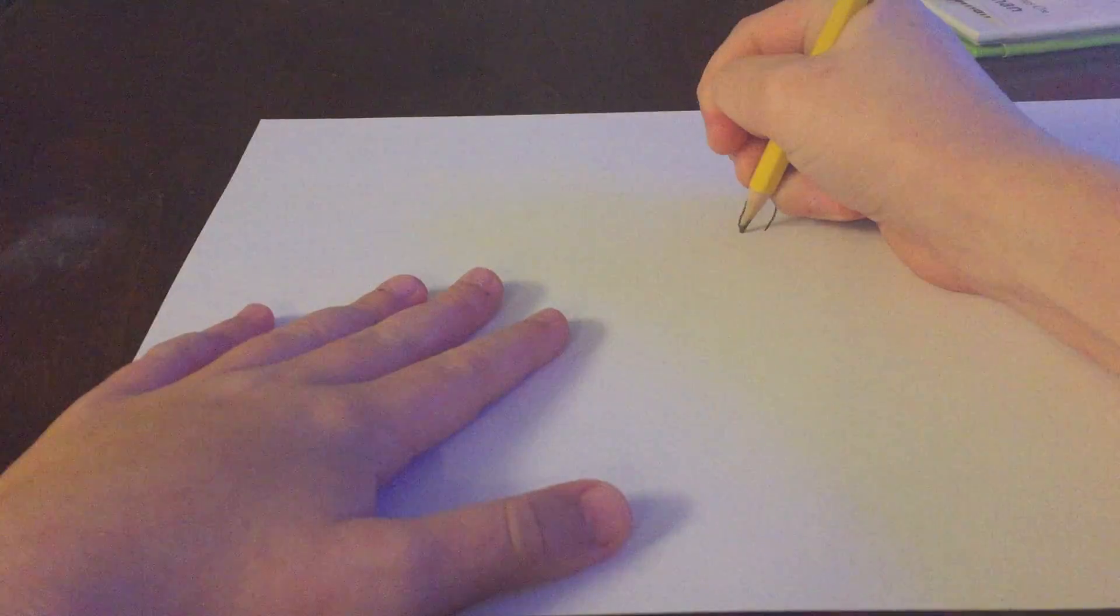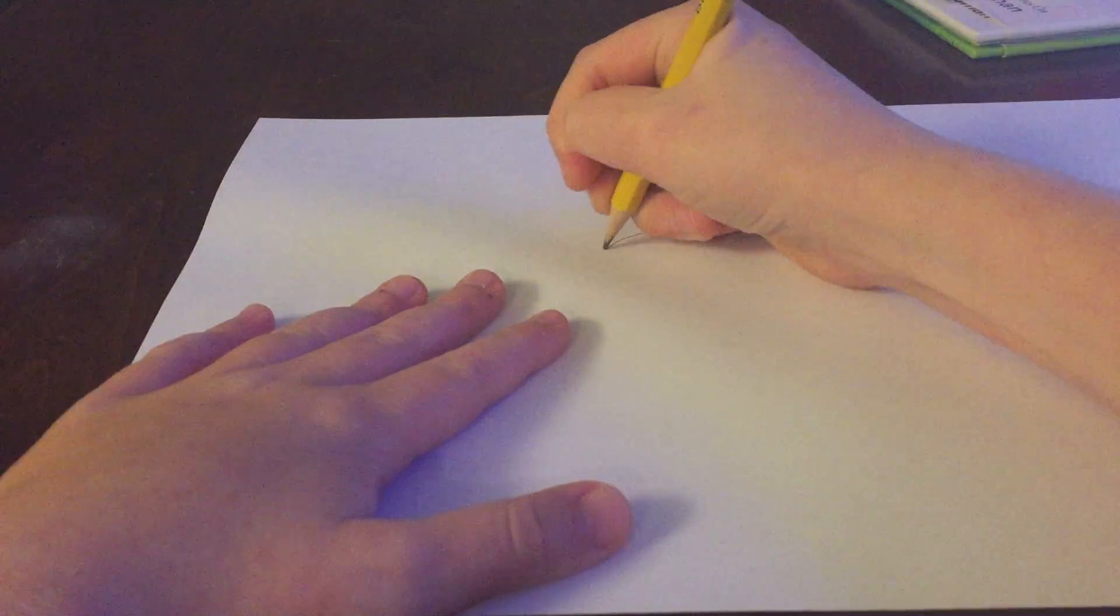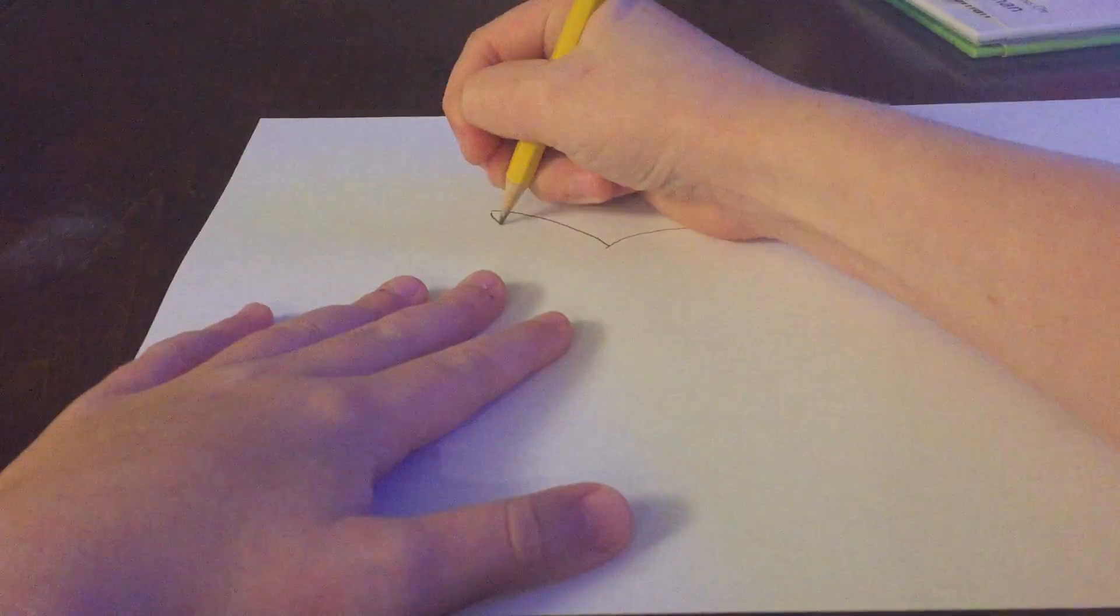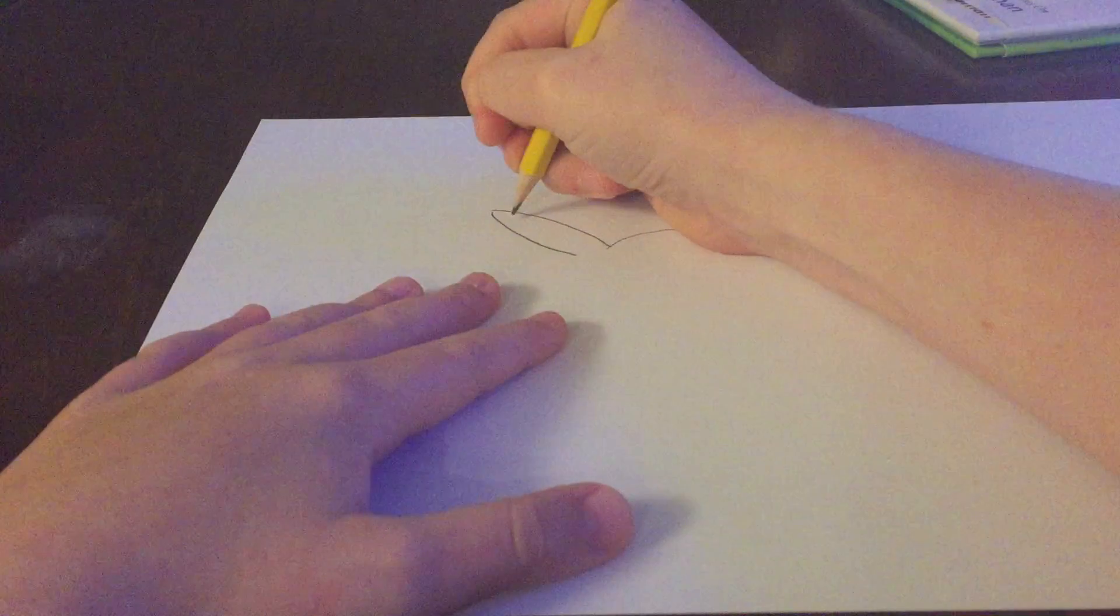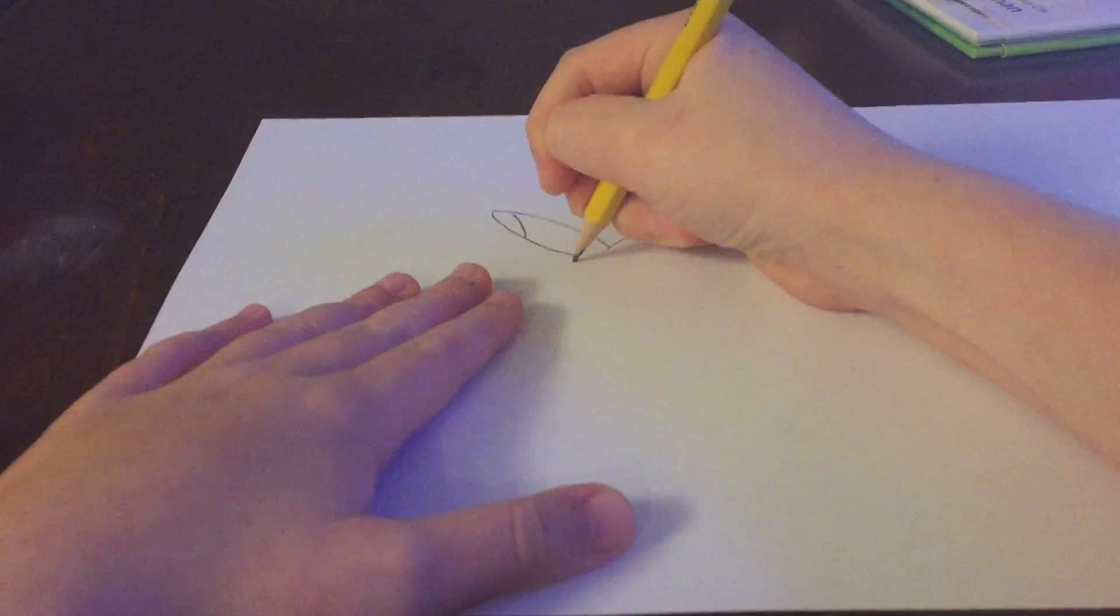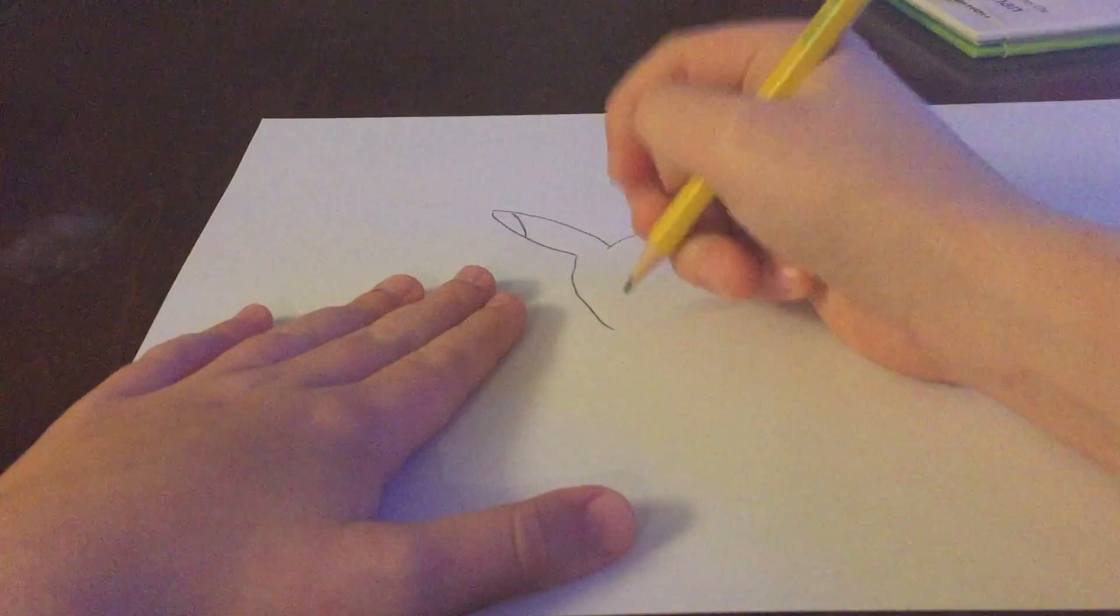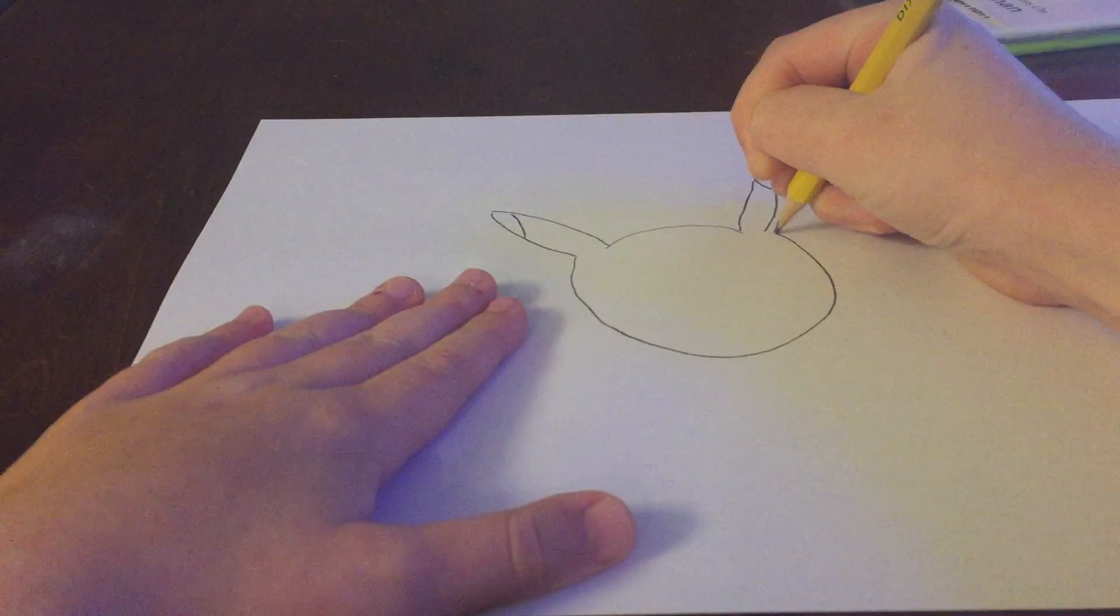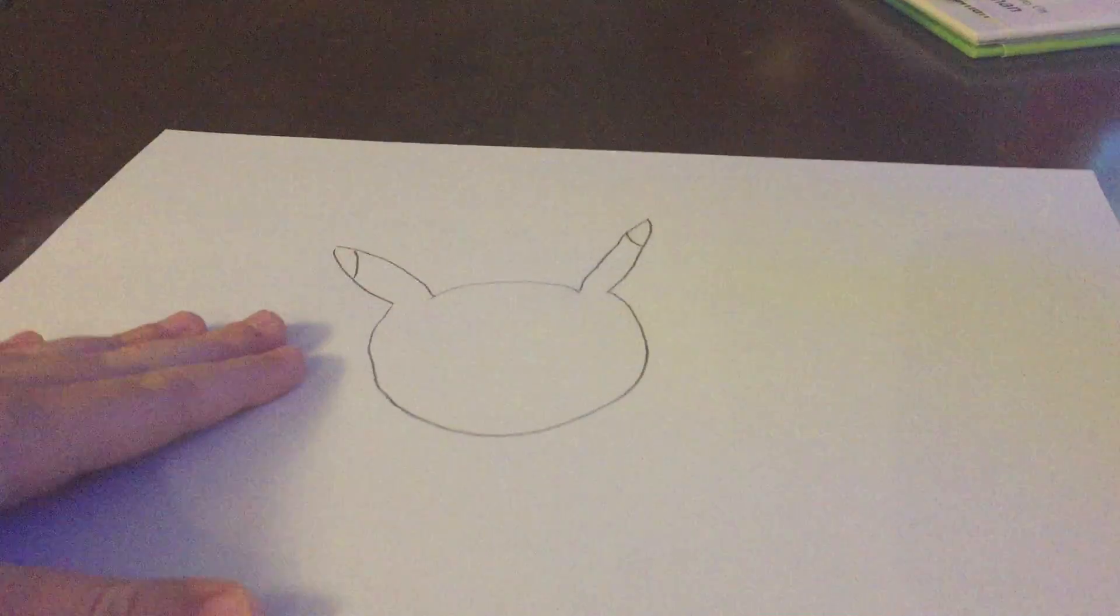And then you're gonna make a line right here and make his ear again. That's his head. And you're gonna do his mark again. Then we're going to draw his head like that. This is how your paper should look.